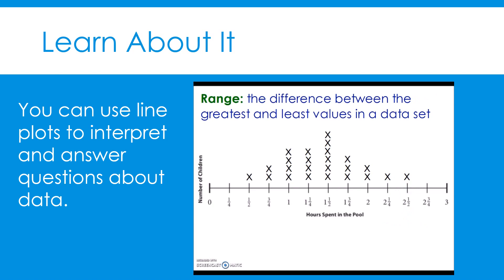Next, let's find the range. The range is the difference between the greatest and least values in a data set. In order to determine the range, you need to know the maximum and the minimum of your data set. We have already found that. The maximum is two and one-half and the minimum is one-half. So to find the range, we will subtract two and one-half minus one-half. The range is two hours.